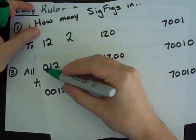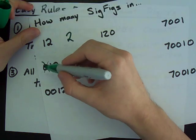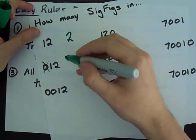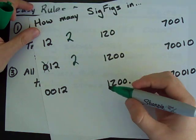But here, leading zeros never count. That's not significant. This also has two significant digits.